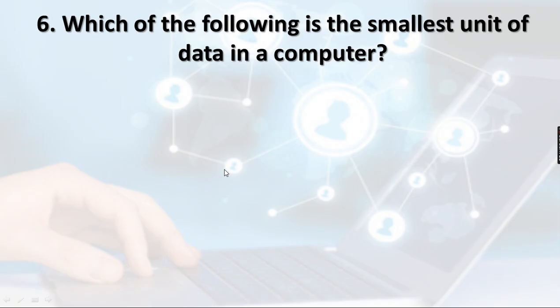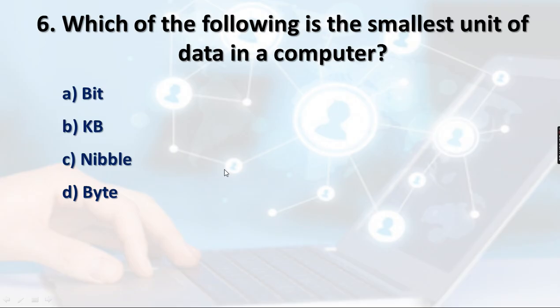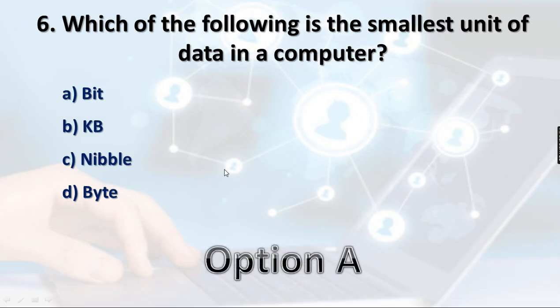Question 6: Which of the following is the smallest unit of data in a computer? Option A: Bit, Option B: KB (Kilobyte), Option C: Nibble, Option D: Byte. A bit is either 0 or 1. 1 KB = 1024 bytes, 1 nibble = 4 bits, 1 byte = 8 bits. The smallest unit is the bit, so option A is the right answer.